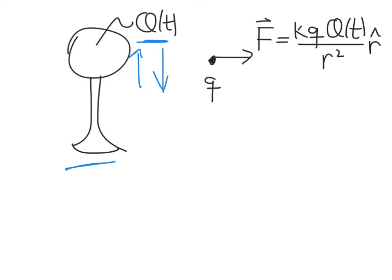Now, if we imagine a test charge out somewhere around the Van de Graaff generator, little q, that test charge is going to feel a force, given by Coulomb's law over here, and you can see that because big Q is a function of time, the force is going to be a function of time. In other words, the force felt by this little test charge is going to change as we let time run on, even if we hold the test charge fixed at a fixed distance from the Van de Graaff generator.